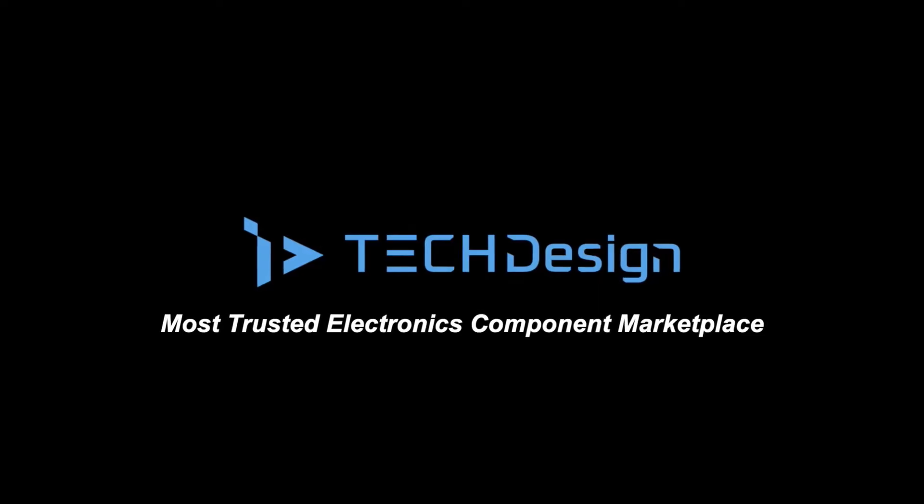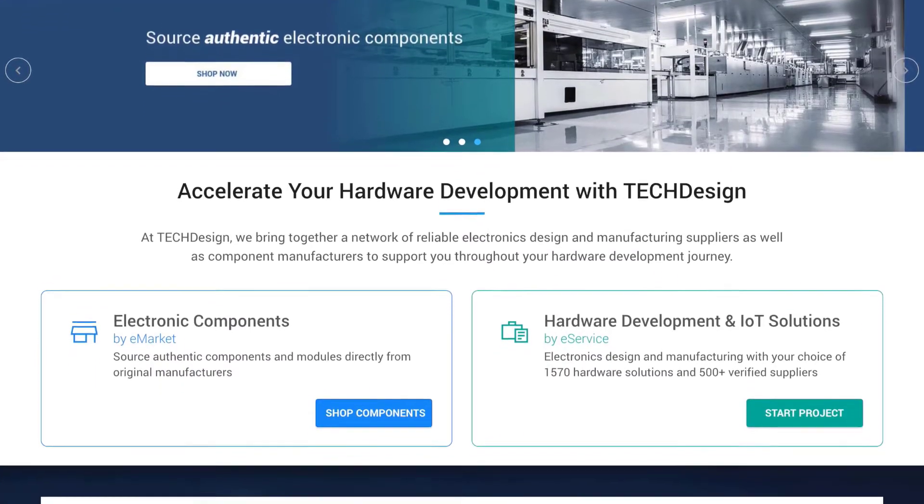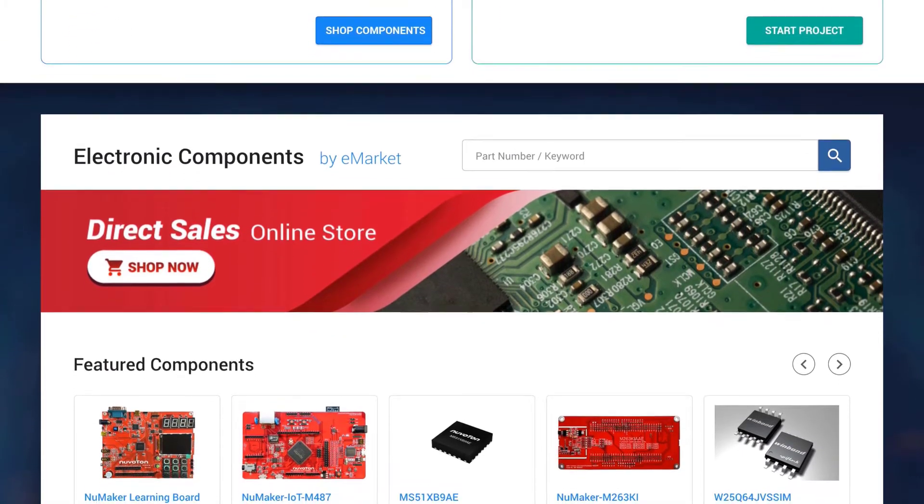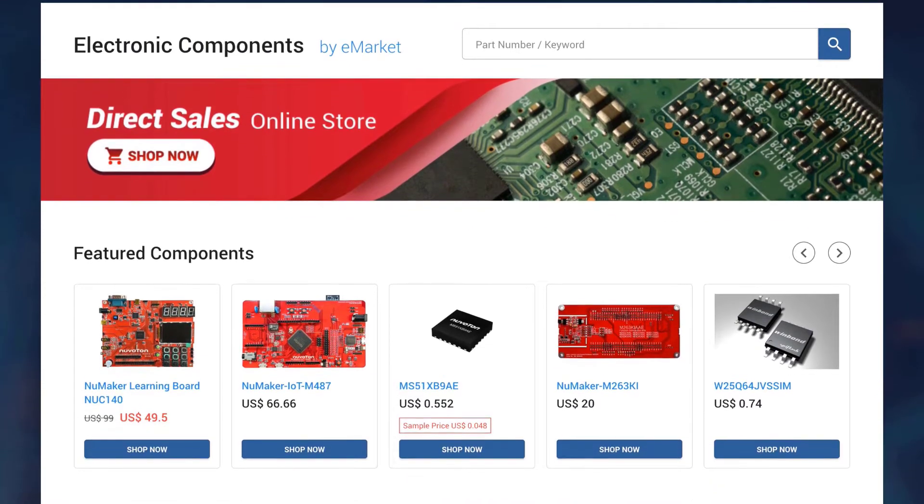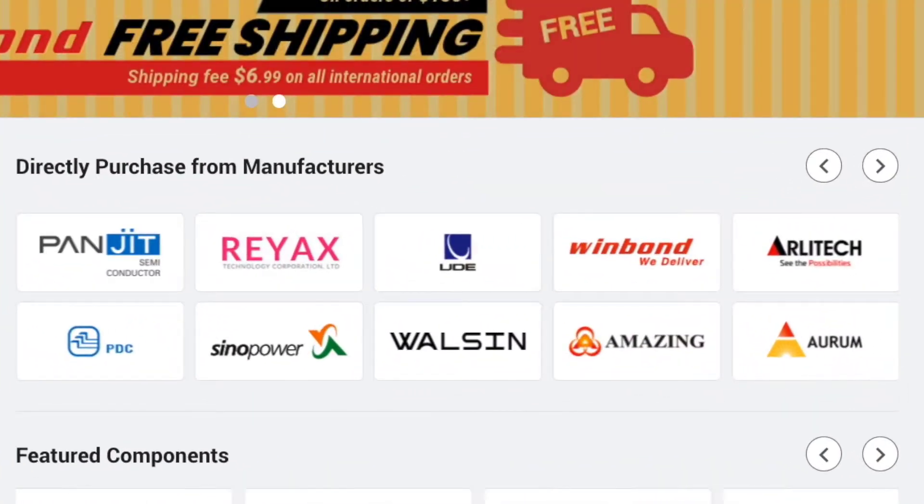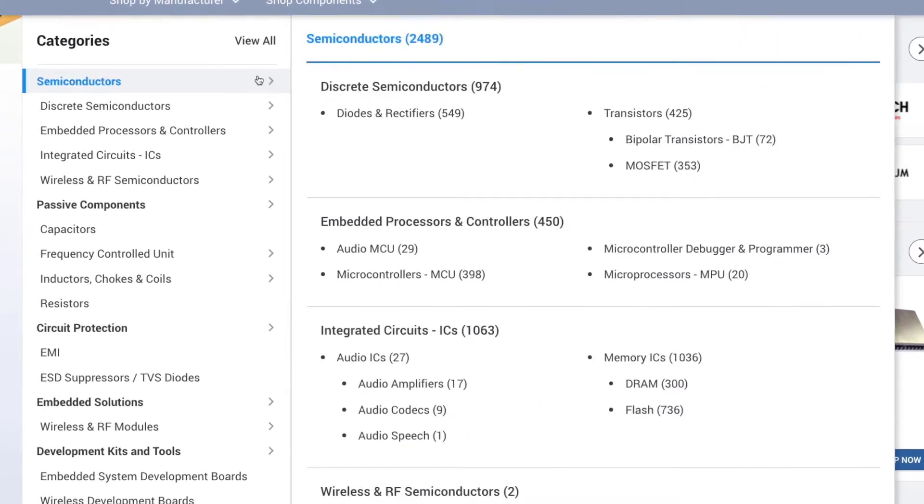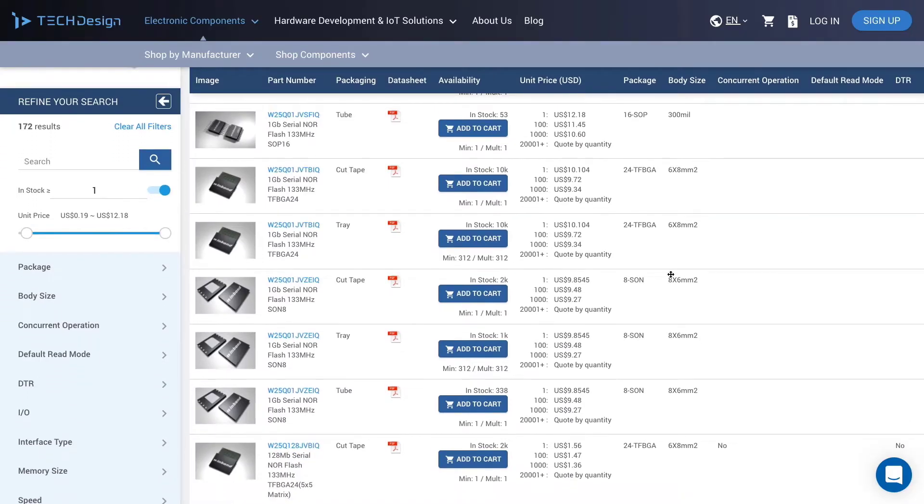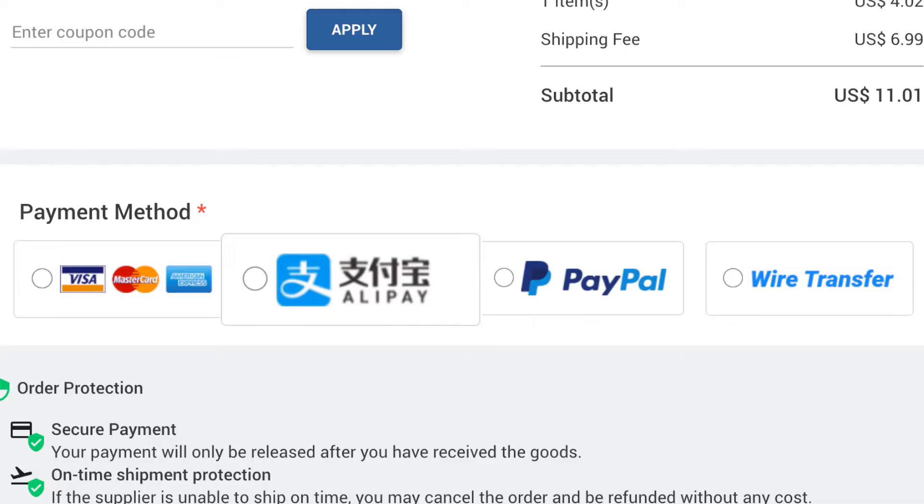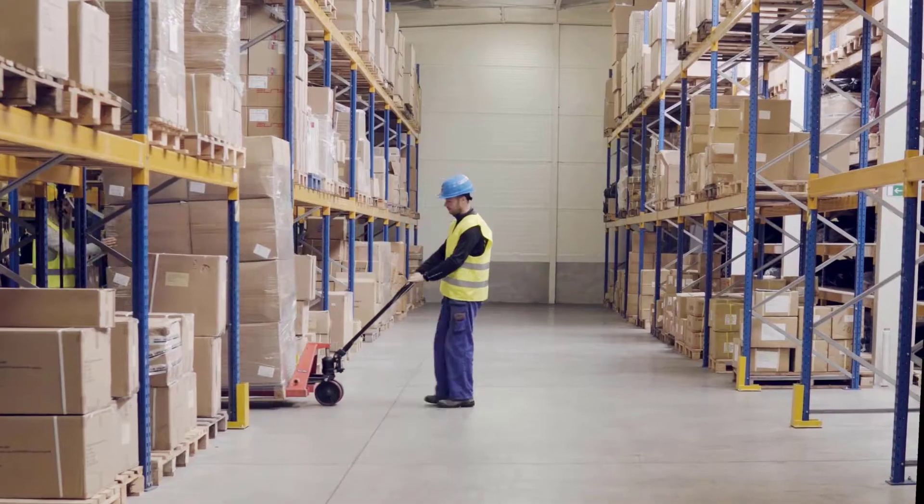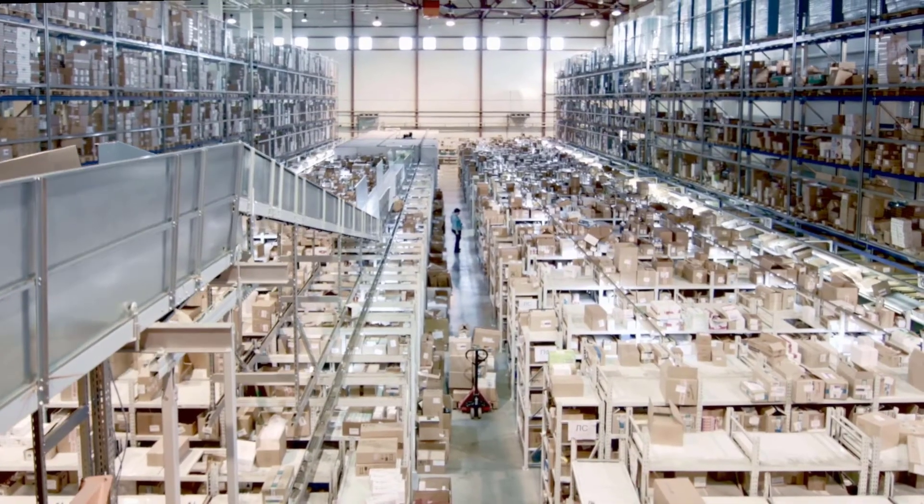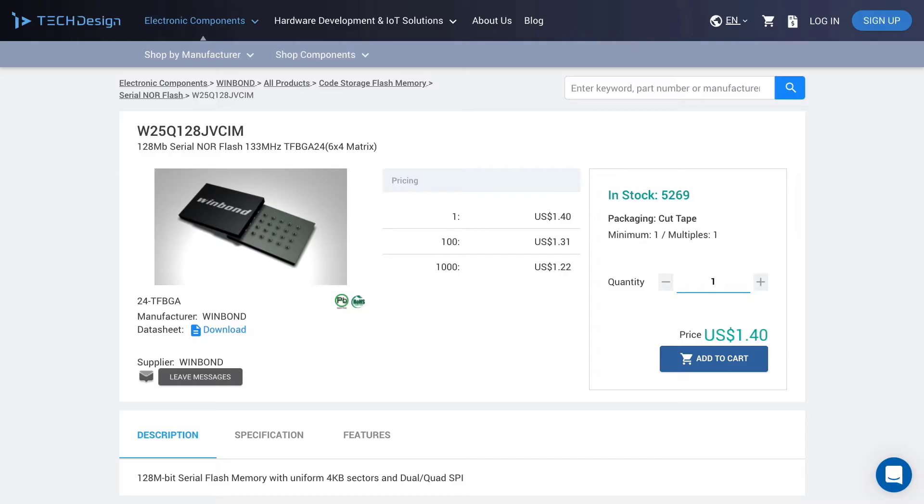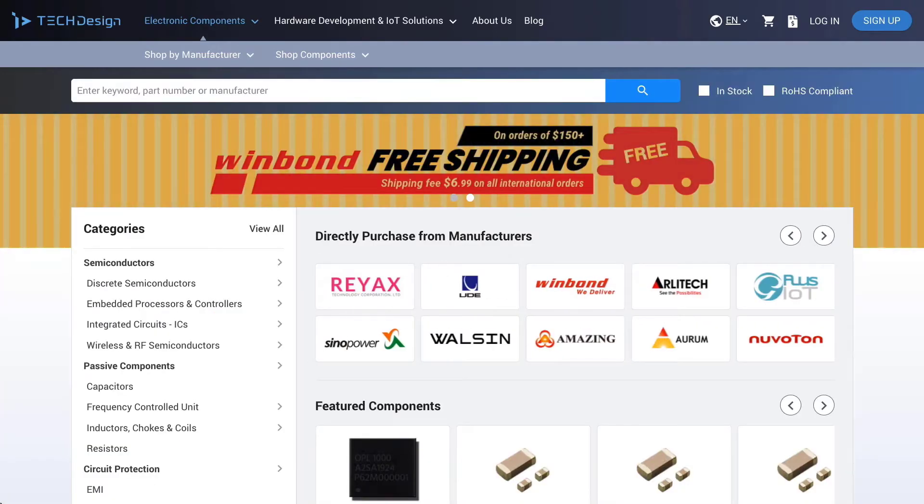This video is sponsored by Tech Design. Tech Design is an e-commerce platform that allows worldwide hardware developers to buy electronic components, modules, and development kits from the original manufacturers directly. All the stores are managed by the manufacturers and you can find large selections of in-stock components and check the real-time inventory update. Just place an order at Tech Design and you can choose to pay by credit cards, Alipay, PayPal, or wire transfer. Then you will receive the product directly from the manufacturer's warehouse. No matter you are a maker, professional engineer, or procurement manager, you can buy from one piece to bulk purchase. Visit Tech Design now.